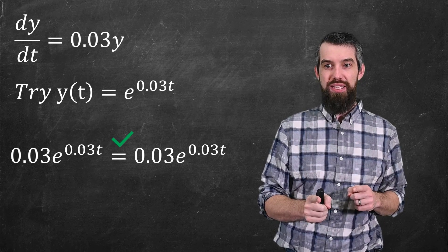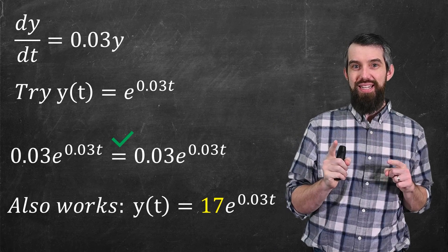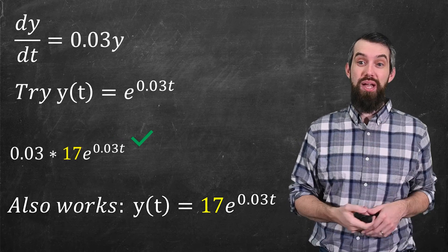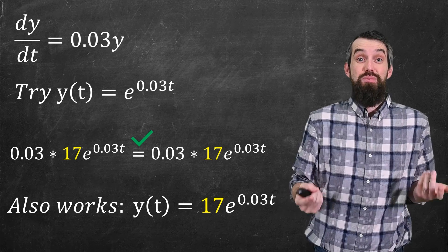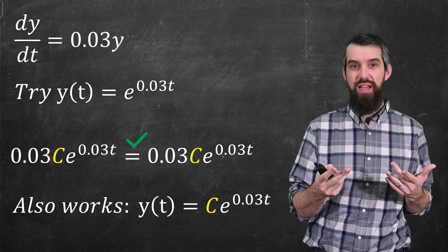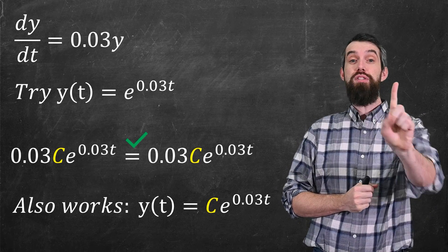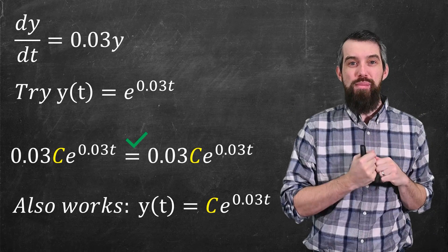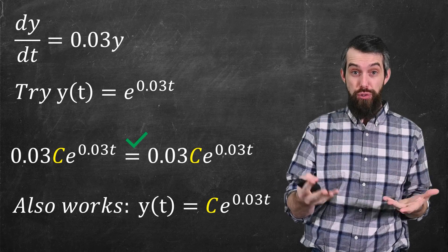I can go even further, because not only is e to the 0.03t a solution, but 17 times e to the 0.03t is also a solution. The 17 was just a placeholder — it could have been any constant c. This gives us our first lesson about differential equations: often there is not one solution but an infinite family of solutions. For every value of c, we get a different solution.